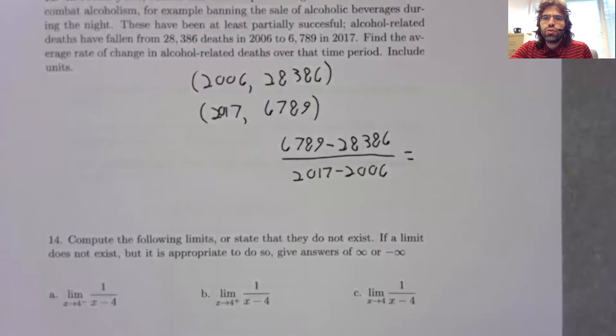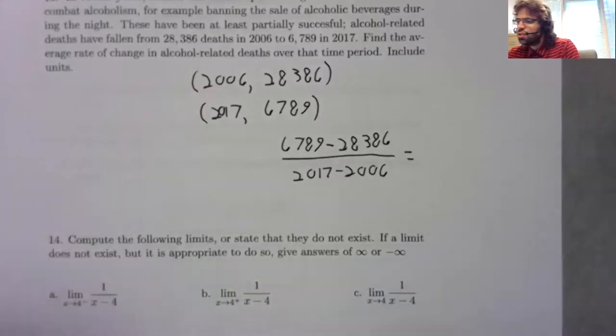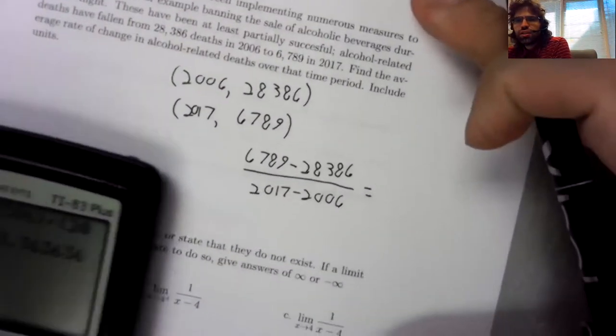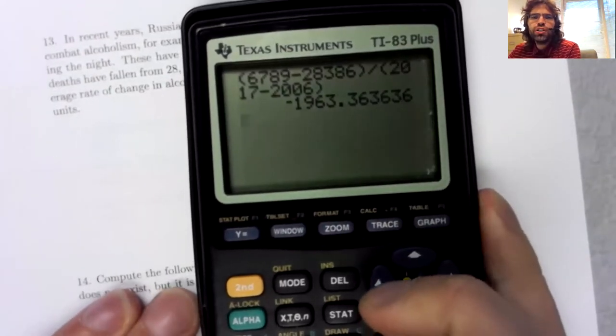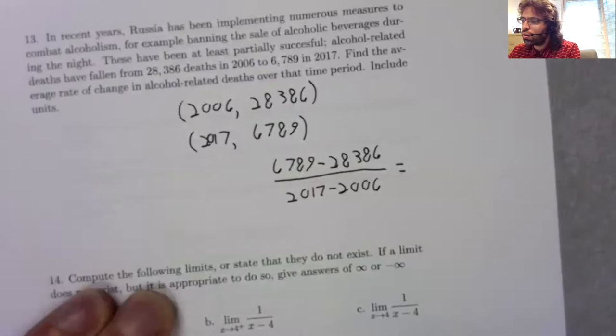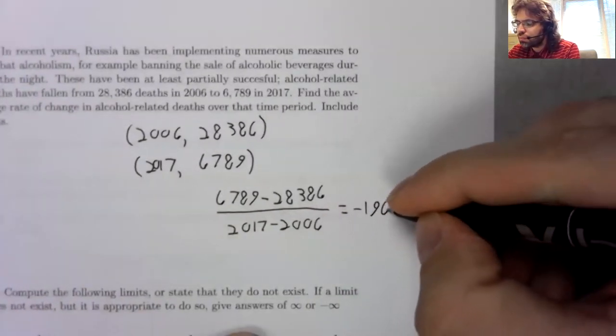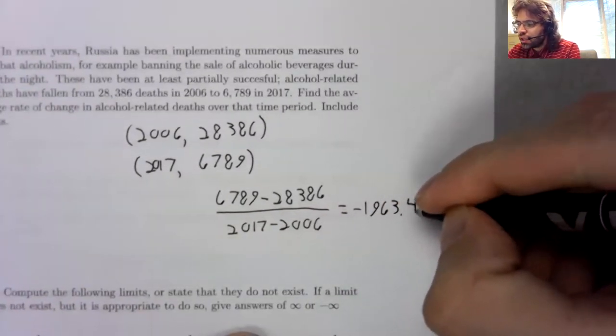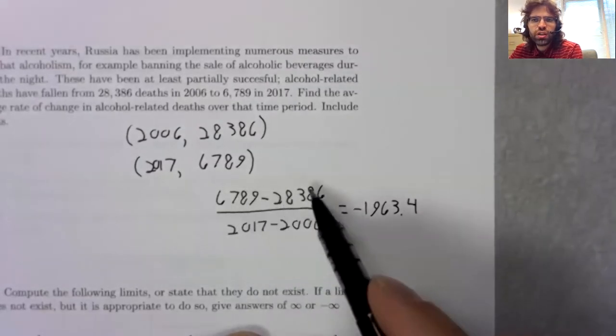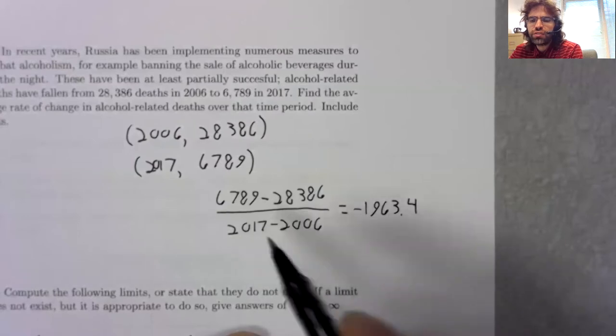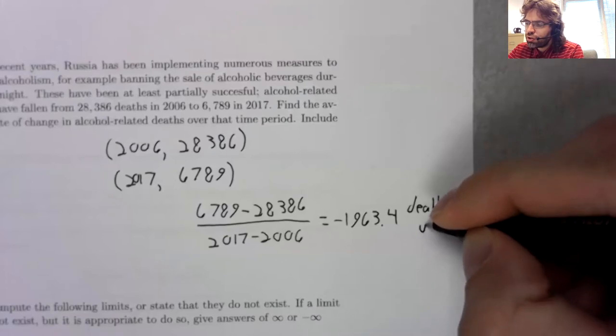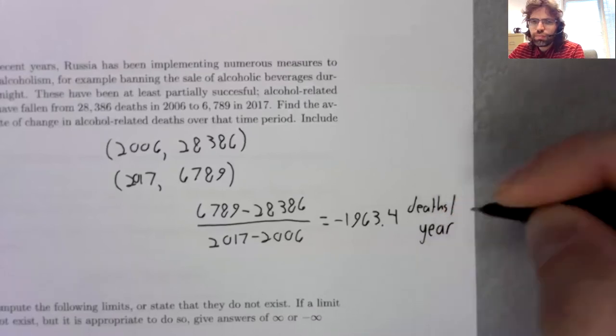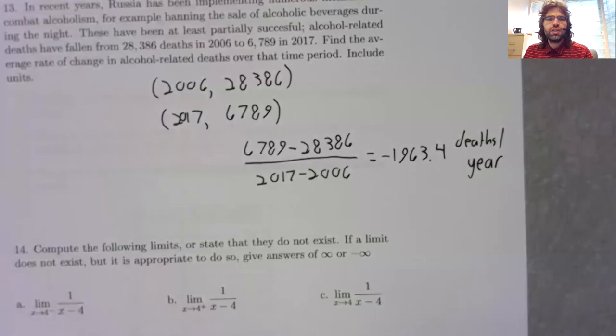I'll pause the recording while I do this on my calculator. So that ended up being this negative one nine six three point four. And the numerator is the number of deaths. The denominator is years. So our units are deaths per year.